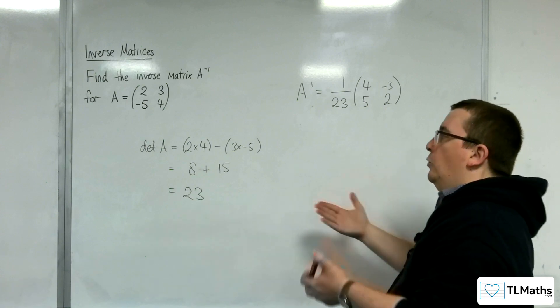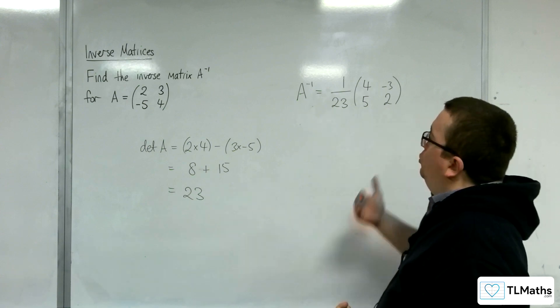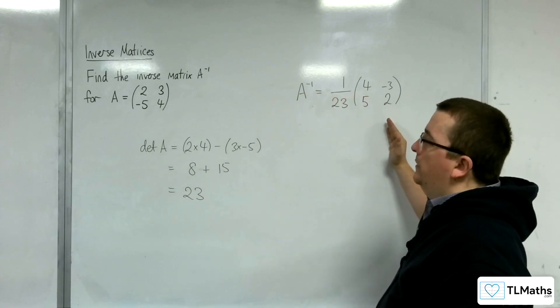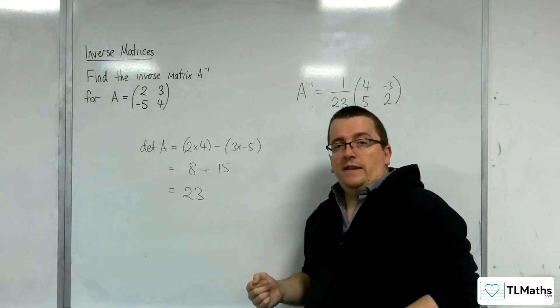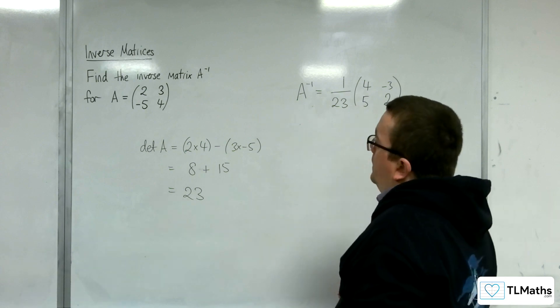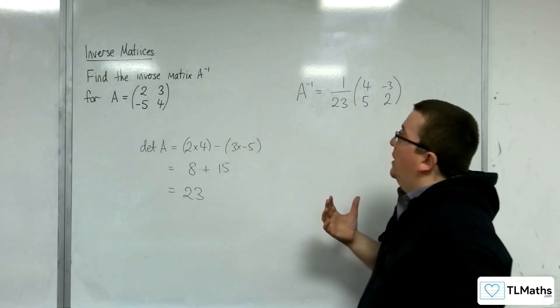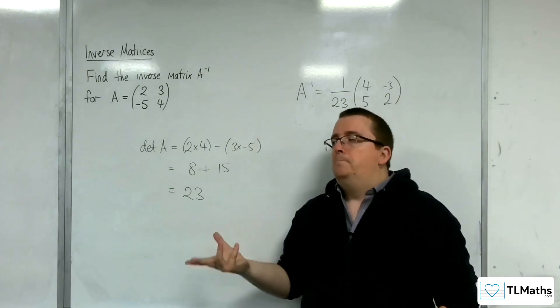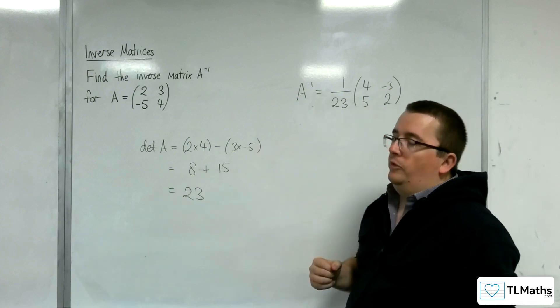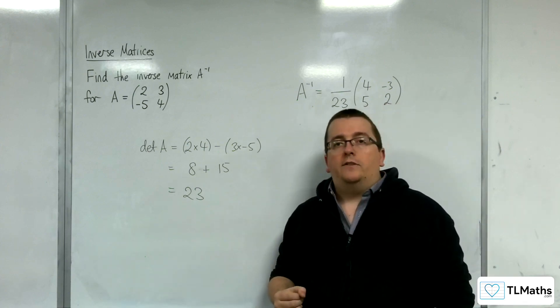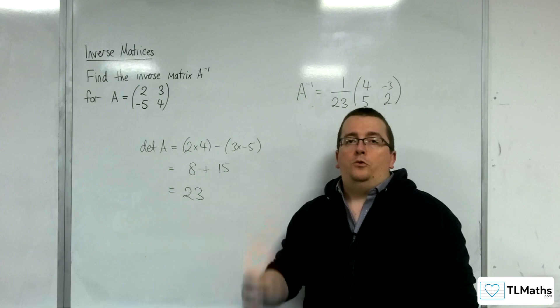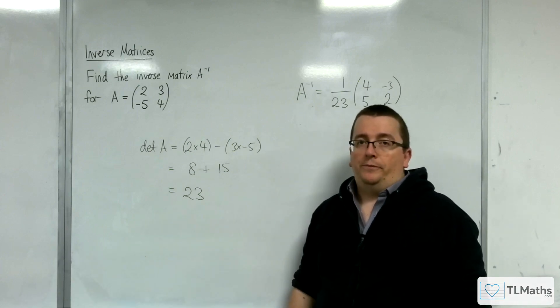So in order to check that, you could multiply these two matrices together, and you should get the identity matrix. That would be the idea. So you might want to double check that that actually occurs. You should also be able to do this on a calculator as well, to double check and confirm your result. We'll see you next time.